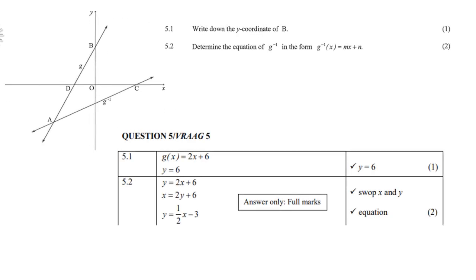5.1, write down the Y coordinate of B. If you look at the graph of B, the Y coordinate is the Y intercept. So therefore, it's exactly where the graph touches the Y axis. So the equation 2X plus 6 gives you very clearly that Y is 6.